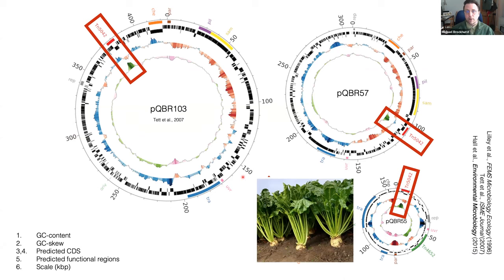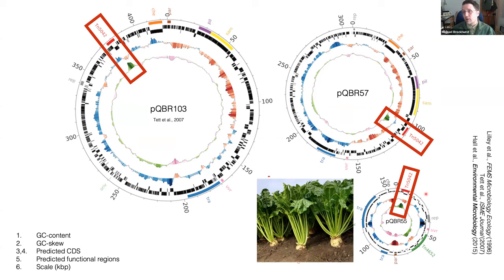The system we work on — plasmids isolated from a sugar beet field — captures something really interesting about their evolution. These divergent plasmids all encode basically the same transposon providing mercury resistance, so even in the field that transposon is probably jumping around hitching rides on different plasmids. That was revealed by an exogenous capture experiment back in the 90s by Andrew Lily. Most of the plasmids are pretty big and encode a bunch of other stuff, but we focus on the mercury resistance trait.